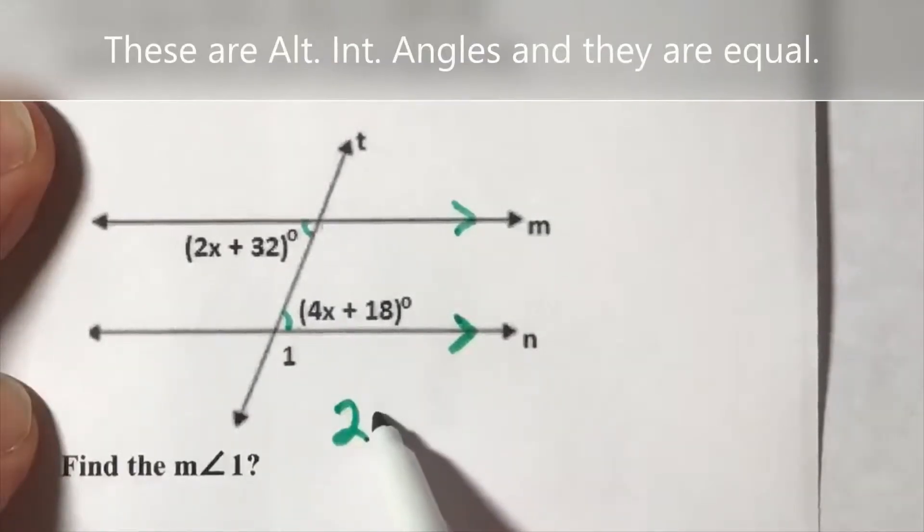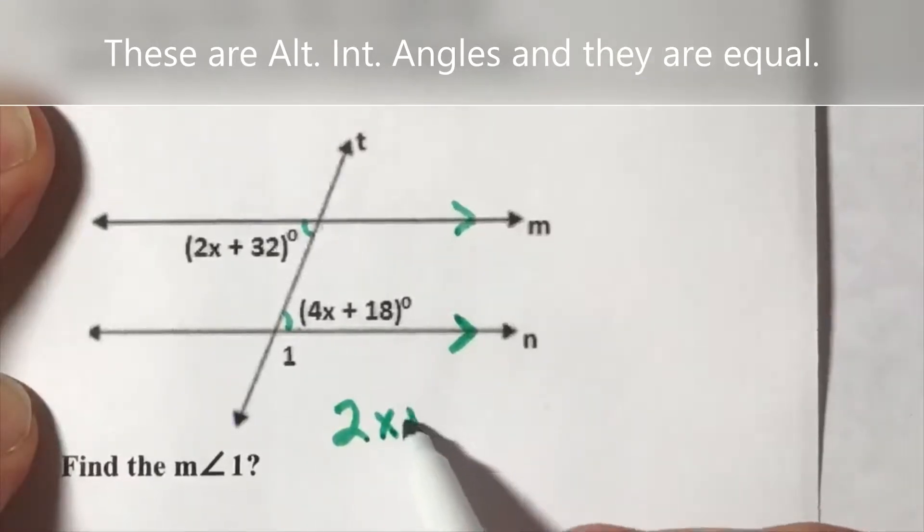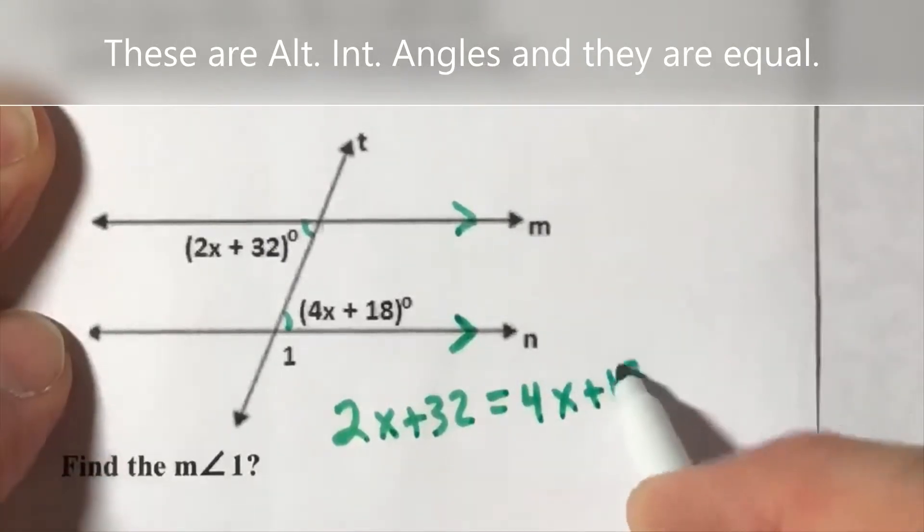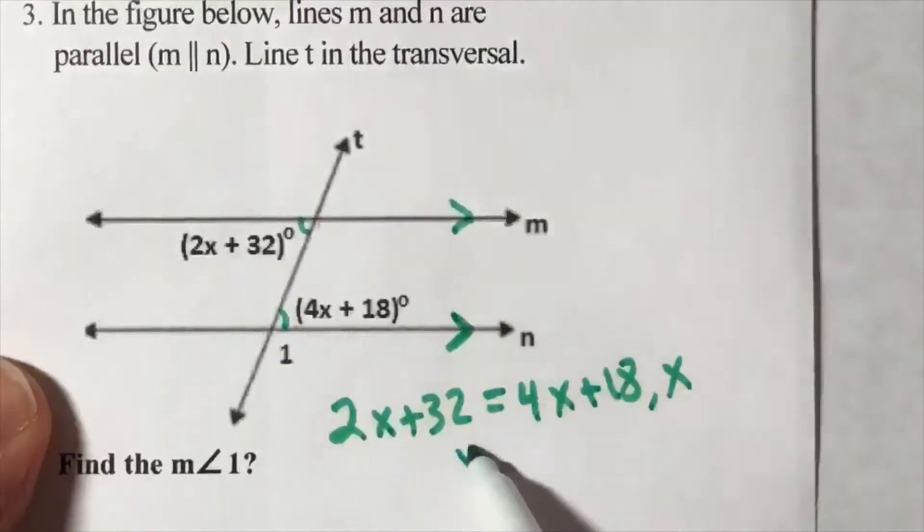So we begin writing 2x plus 32 equals 4x plus 18, and x equals 7.